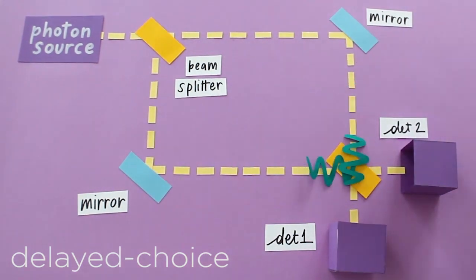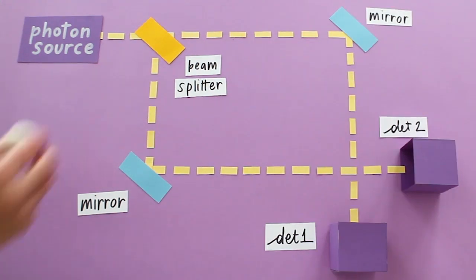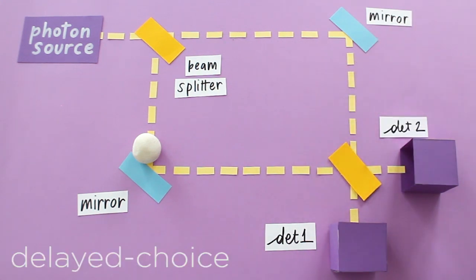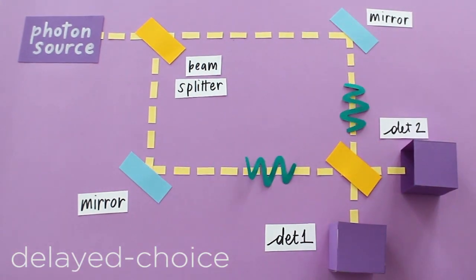To summarize, if the configuration choice is delayed, the purely classical interpretation of the process, in which the photon decides its character at the first beam splitter, would imply a seeming violation of causality.